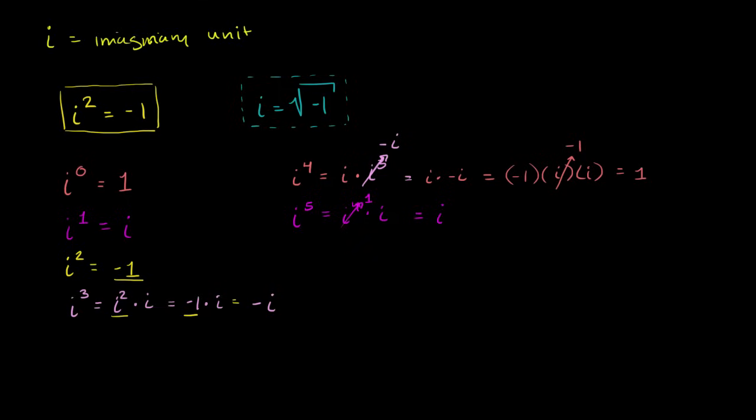Let's try, and just to see the pattern keep going, let's try i to the seventh power. I'm sorry, i to the sixth power. i to the sixth power. Well, that's i times i to the fifth power. That's i times i to the fifth. i to the fifth, we already established, is just i. So it's i times i. It is equal to, by definition, i times i is negative 1.